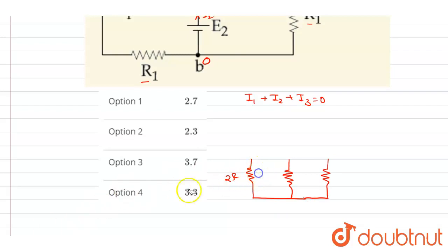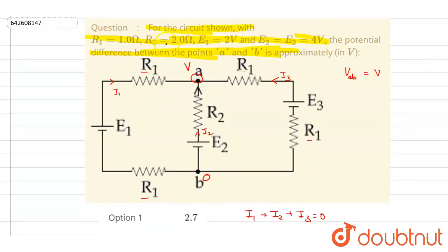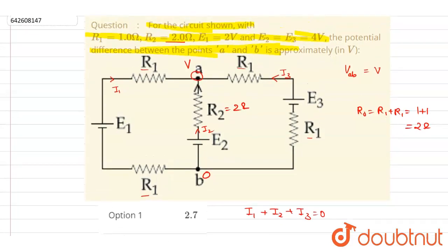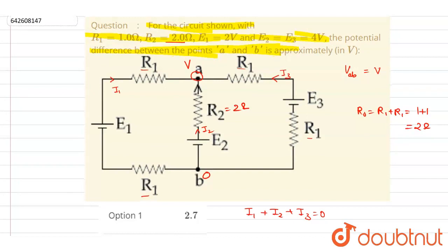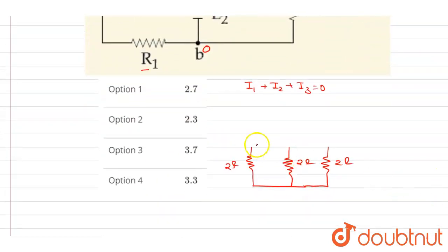It will be 2 ohm again. This is 2 ohm again. If you see here, the R2 is 2 ohm and R1 and R1 are in series, so R0 will be R1 plus R1, so it will be 1 plus 1, so it is 2 ohm again. Now E1, E2, and E3: E1 here is 2 volt and E2 and E3 are 4 volt.